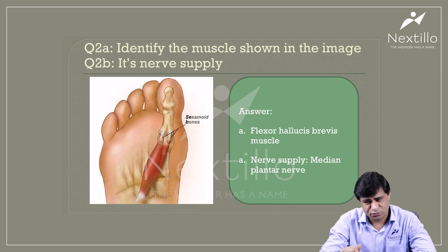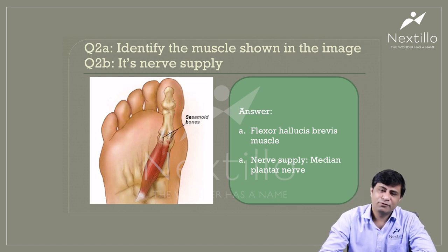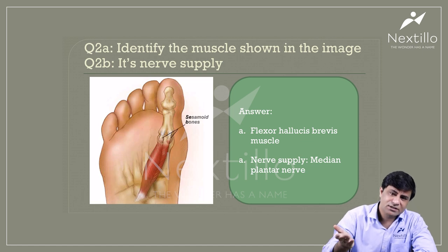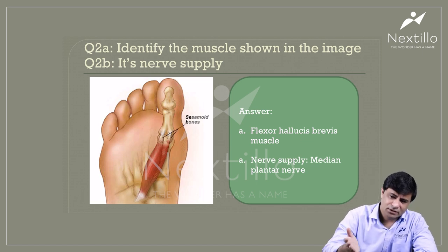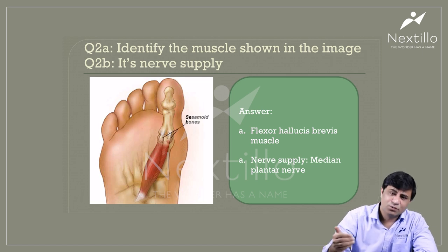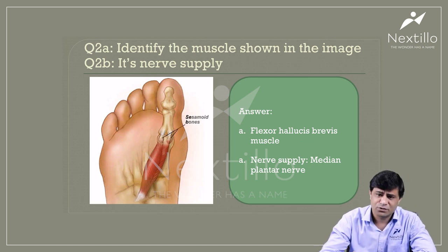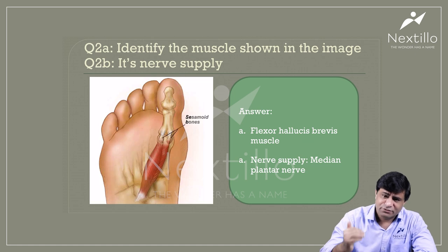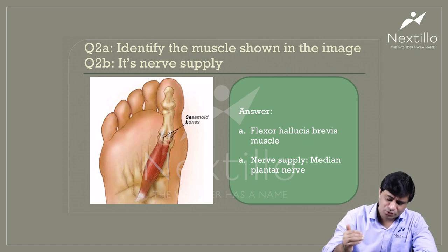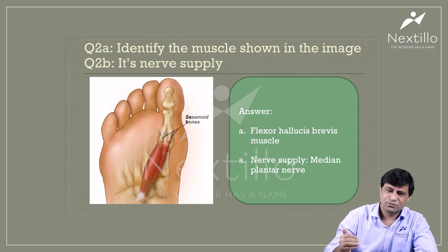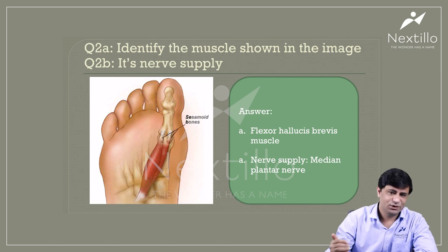The tibialis posterior is supposed to reach up to the great toe in the form of the medial head of flexor hallucis brevis. The lateral head arises from the undersurface of the cuboid — the medial edge of the cuboid — along with the adjacent lateral cuneiform bone. The cuboid undersurface has a groove for the tendon of peroneus longus, and this lateral head takes origin behind that groove.